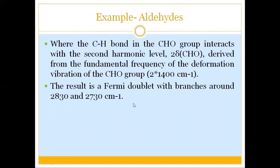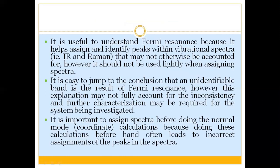Another example is aldehydes, where the C-H bond in the CHO group interacts with the second harmonic of the deformation vibration of the CHO group. The first overtone of the ~1400 cm⁻¹ peak falls near 2800 cm⁻¹, resulting in a Fermi doublet with two peaks around 2830 and 2730 cm⁻¹.